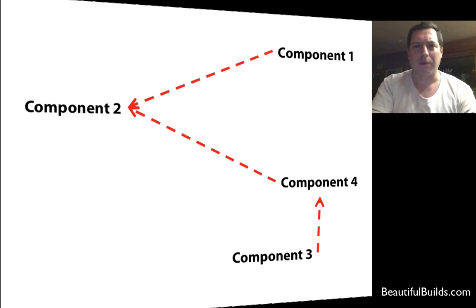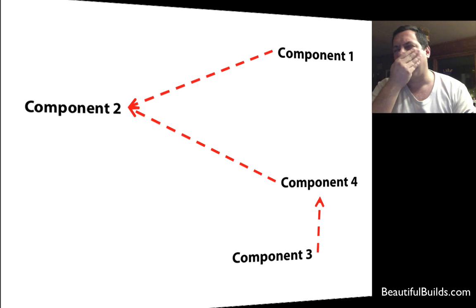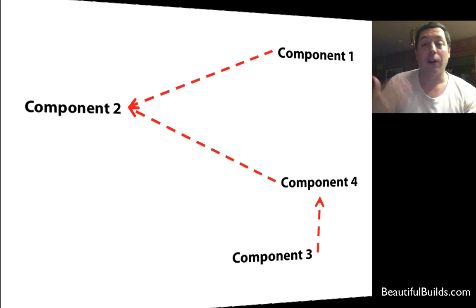So what is this problem? Let's say that you're working on awesome component number two. But your component depends on component one and component four and component three. And also component four depends on component three. Awesome. What do you do? Well, in the build, you could, of course, do what we talked about before and just get the artifacts.